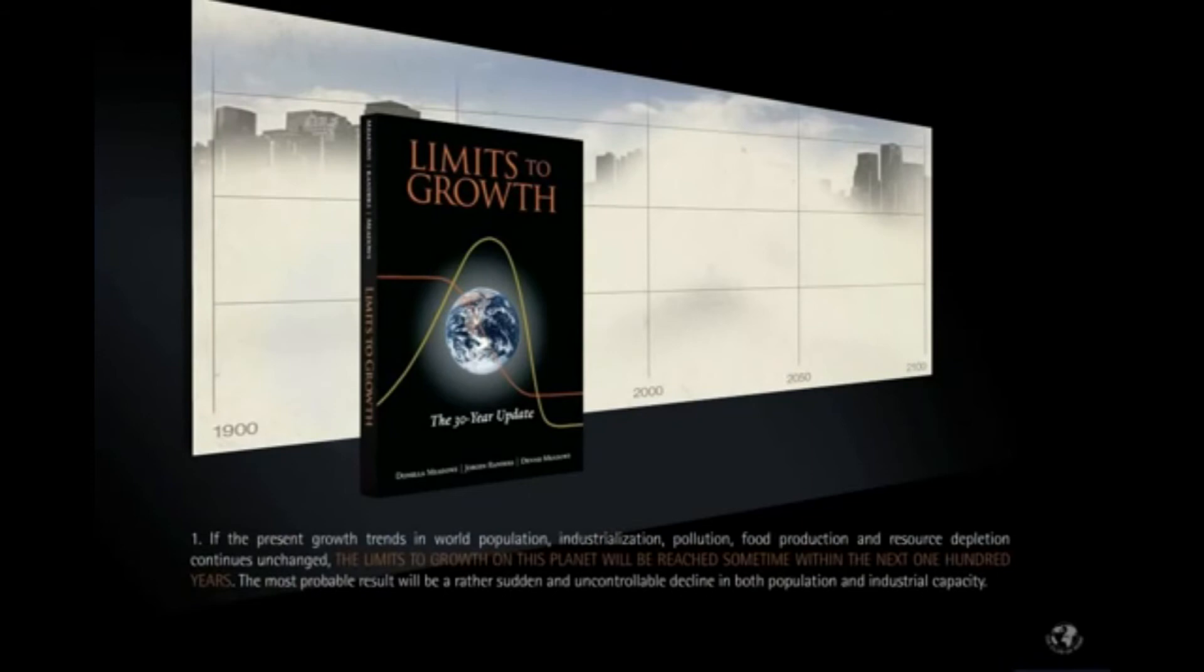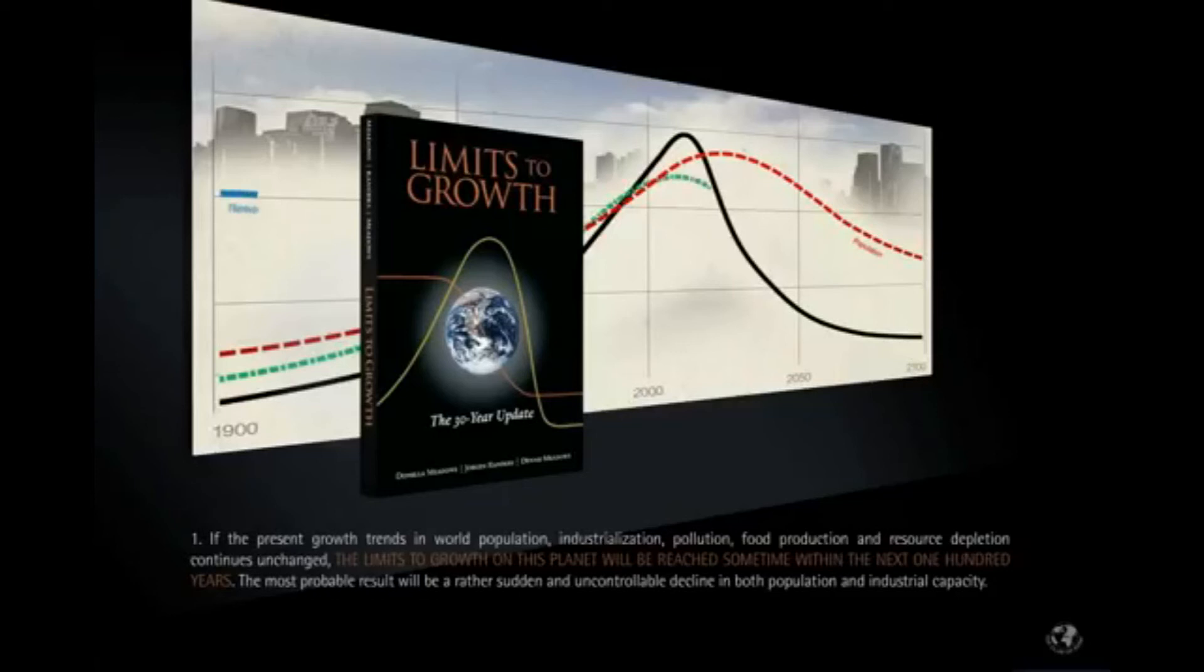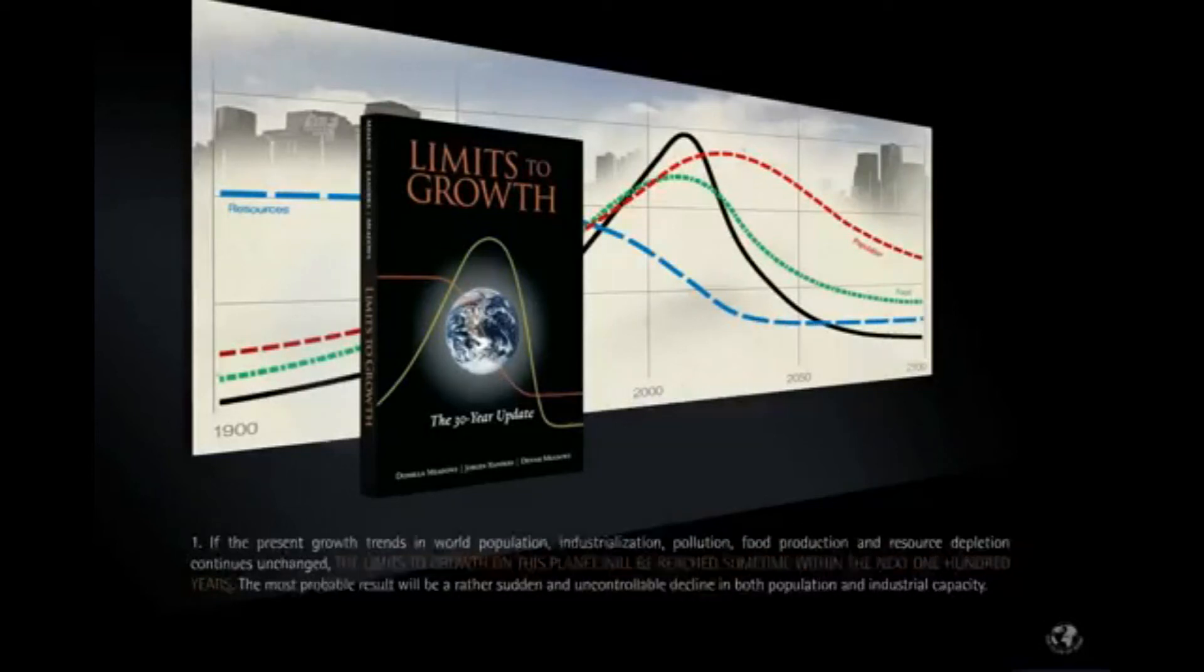First: If the present growth trends in world population, industrialization, pollution, food production, and resource depletion continues unchanged, the limits to growth on this planet will be reached some time within the next 100 years. The most probable result will be a rather sudden and uncontrollable decline in both population and industrial capacity.